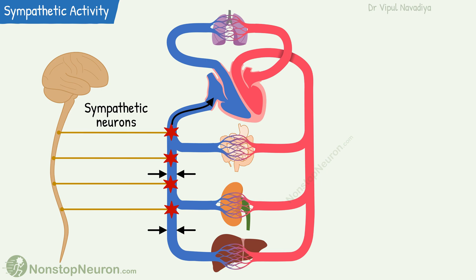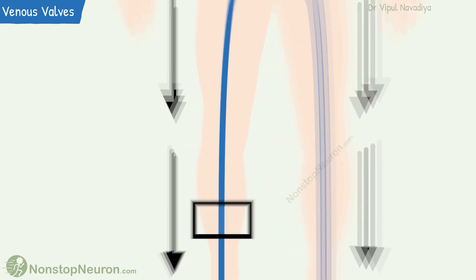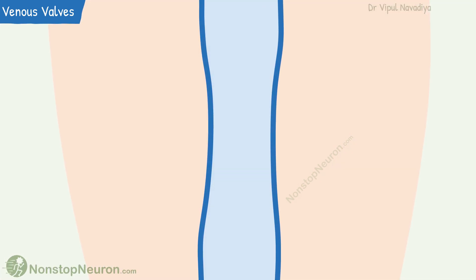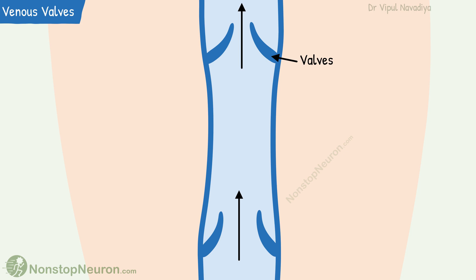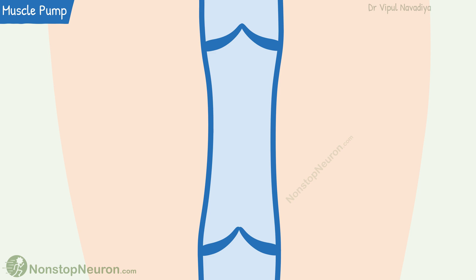The next factor is venous valves. In a standing position, gravity tends to pull blood down, thus gravity tends to decrease venous return. However, the effect of gravity is countered by valves in the veins. Veins have one-way valves that allow only upward flow of blood. If blood tries to go back, the valves close and prevent backflow. Thus venous valves counter the effect of gravity and help in venous return.